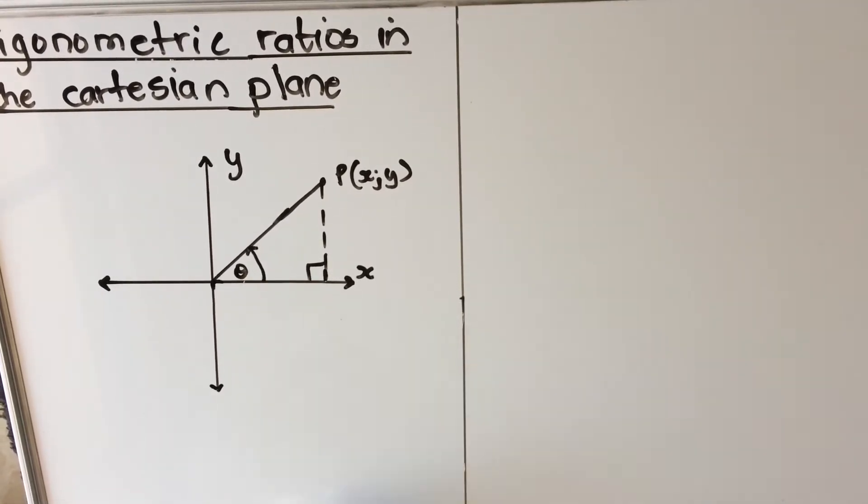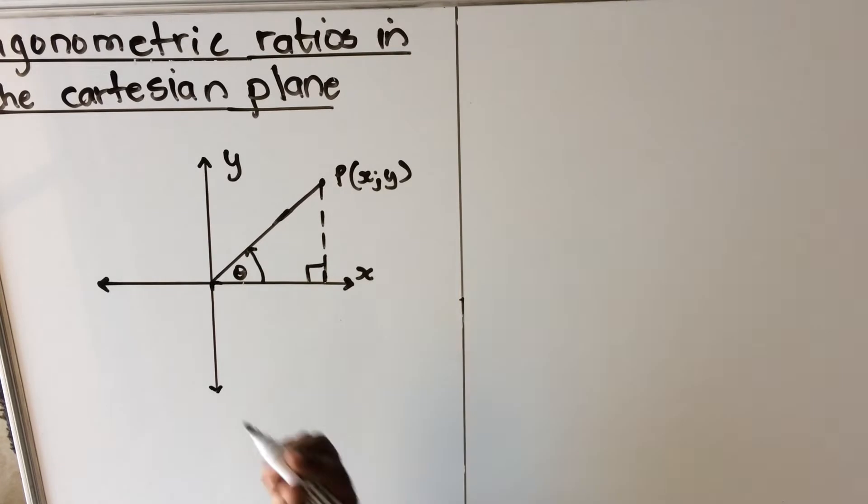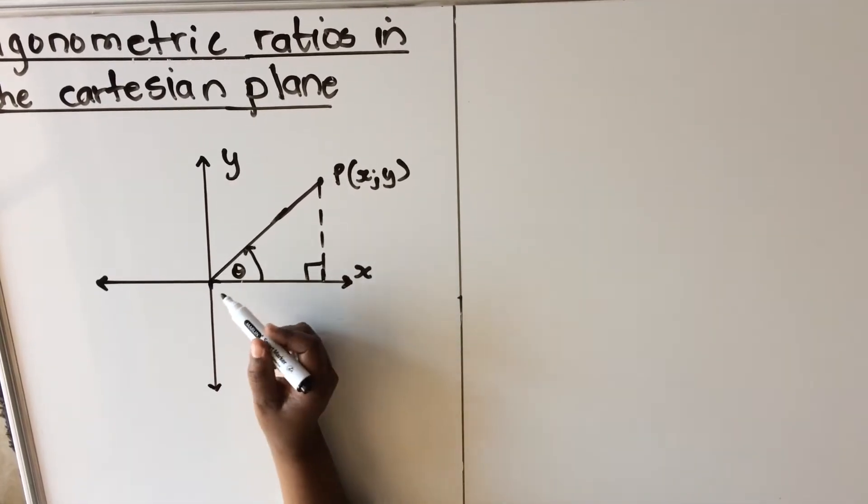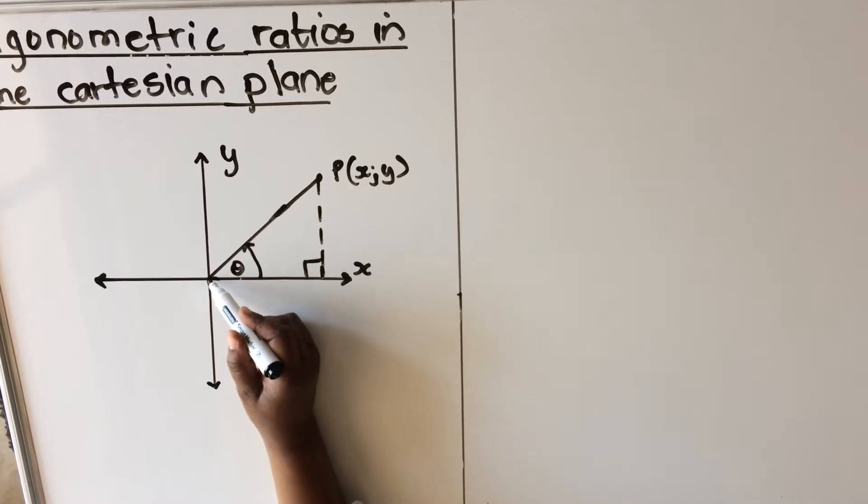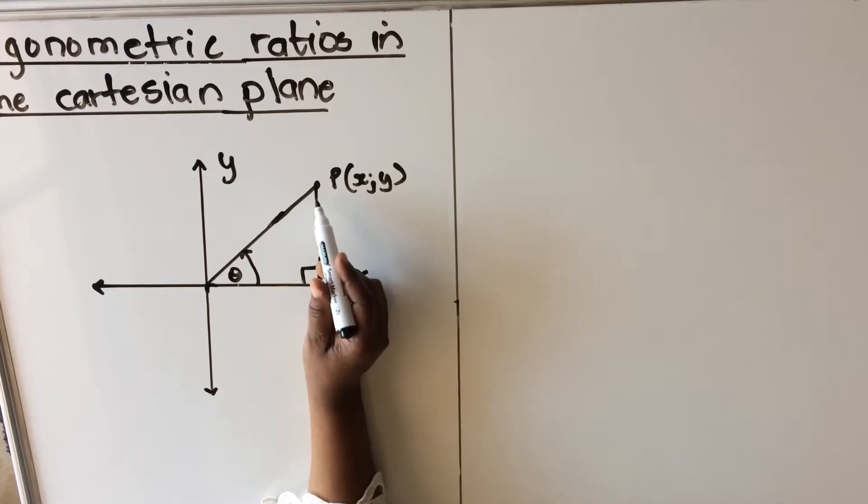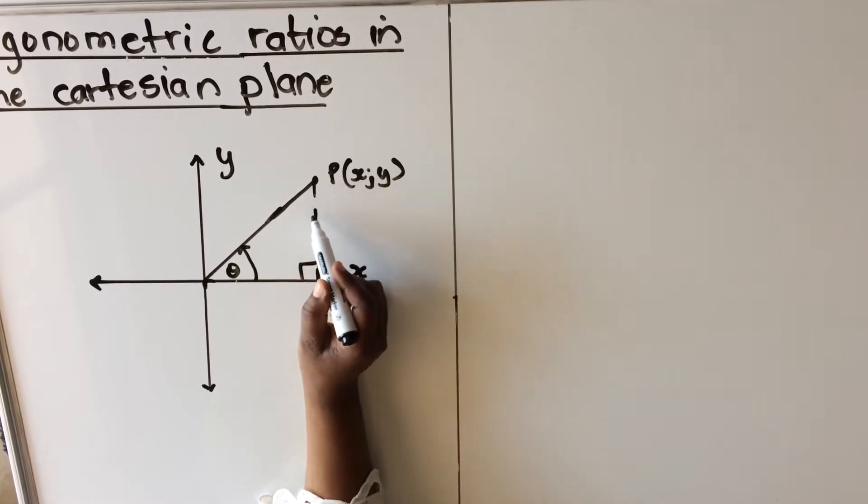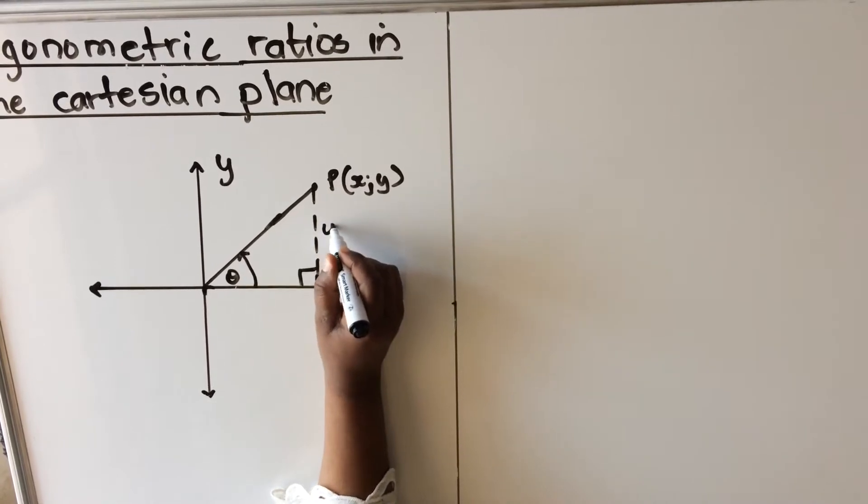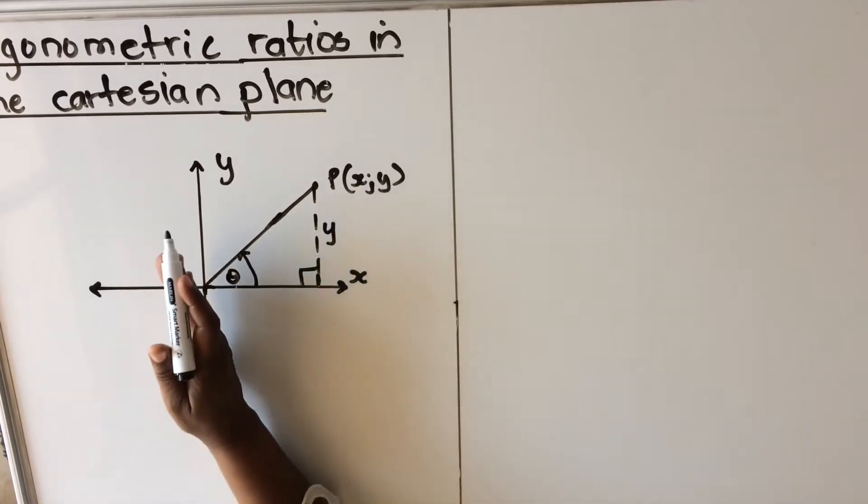When you draw, you remember that trigonometry has to do with triangles. So in a Cartesian plane, you are going to draw from the origin going up in the first quadrant, and then you are going to have a line dotted going down. So this line will be your y, because it's parallel to the y-axis.